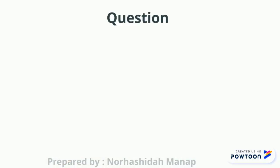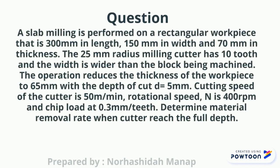The question is: a slab milling is performed on a rectangular workpiece that is 300 mm in length, 150 mm in width, and 70 mm in thickness. The 25 mm radius milling cutter has 10 teeth and the width is wider than the block being machined. The operation reduces the thickness of the workpiece to 65 mm with the depth of cut d equals 5 mm.